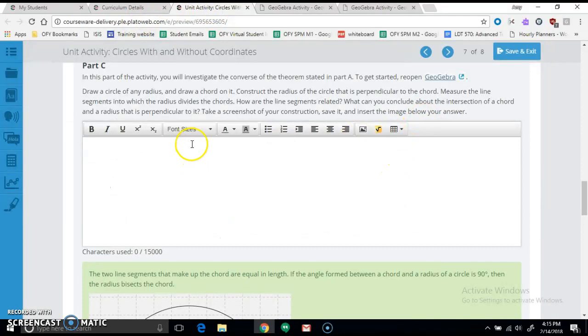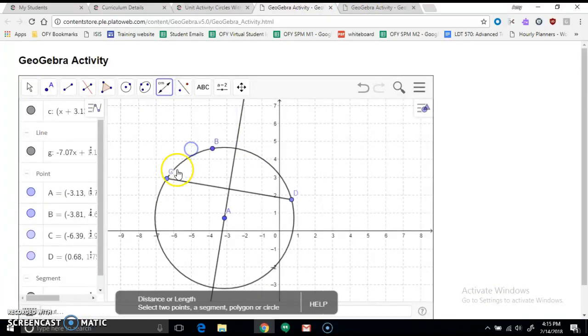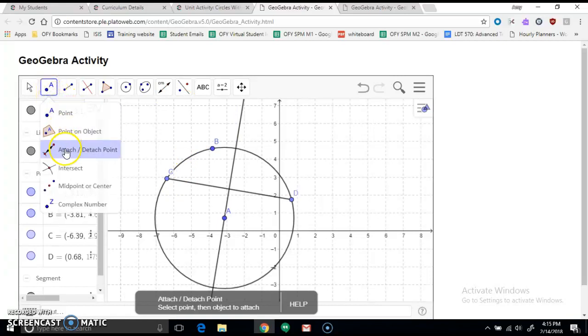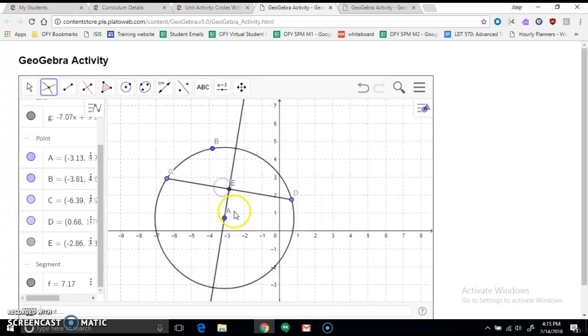And now it says measure the line segments into which the radius divides the chord. How are the line segments related? And so now we want to take our measuring tool to do distance, and let's first actually make a point, an intersection point, here and there.